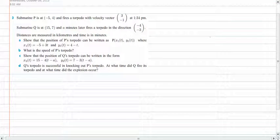This is number 3 on page 362. Submarine P is at negative 5 comma 4 and fires a torpedo with velocity vector 3 over negative 1 at 1:35 PM. Submarine Q is at 15 comma 7 and 8 minutes later fires a torpedo in the direction negative 4 over 3.